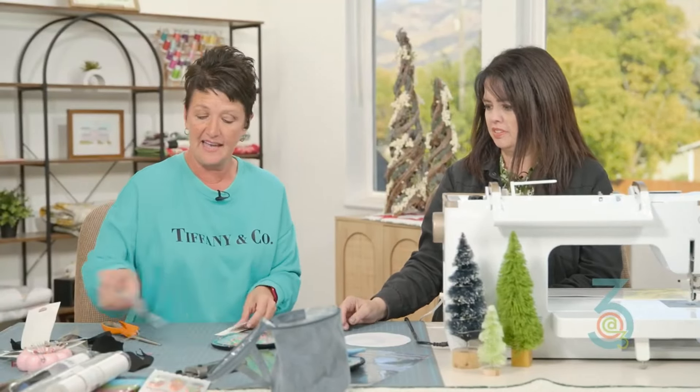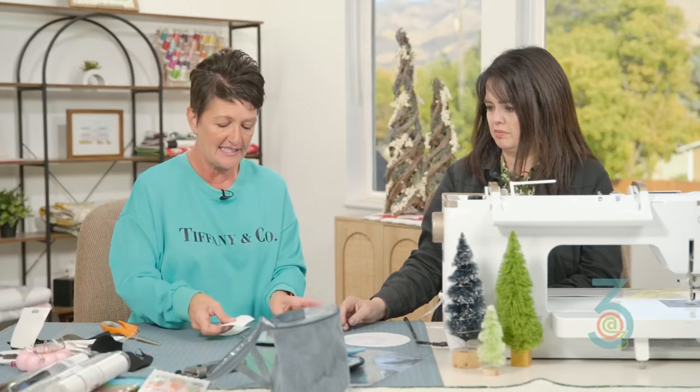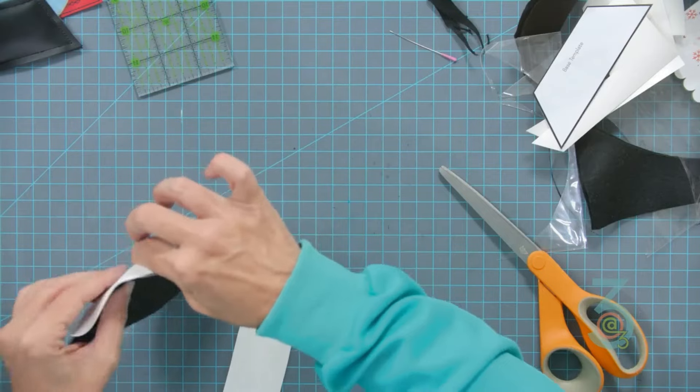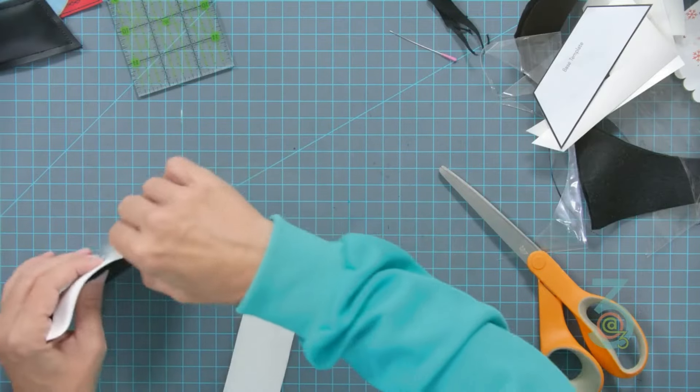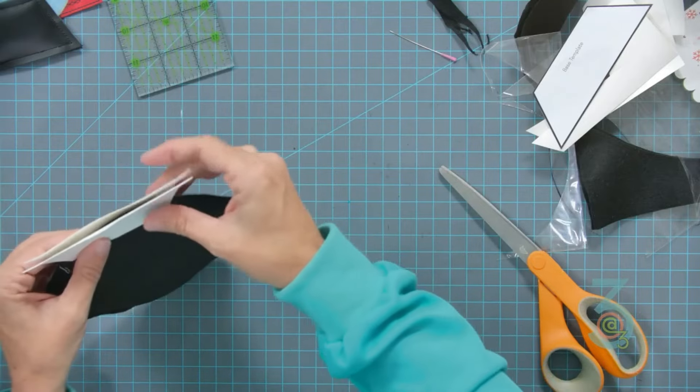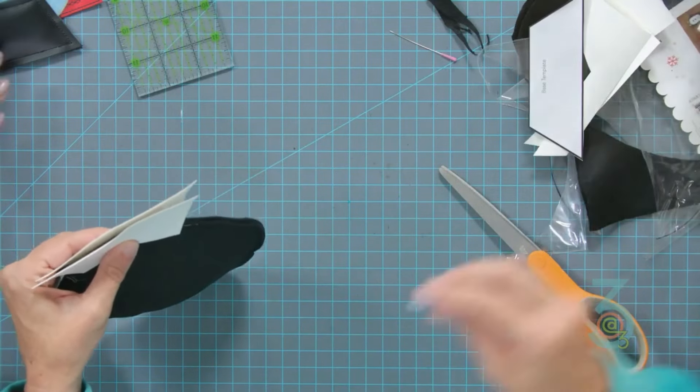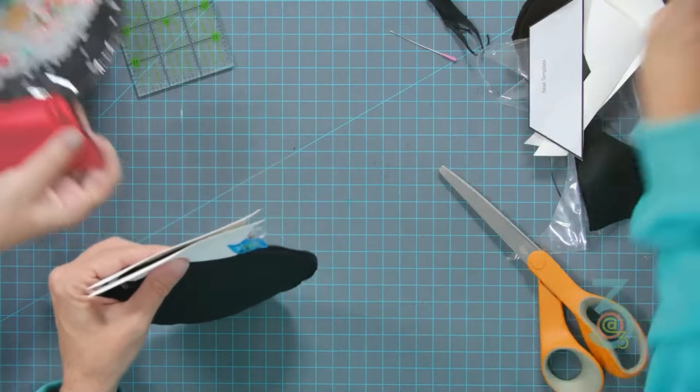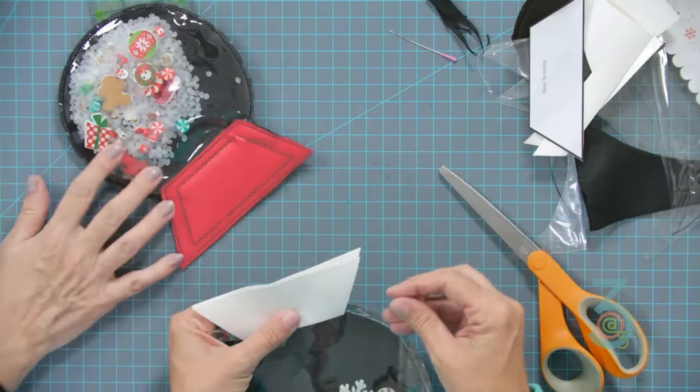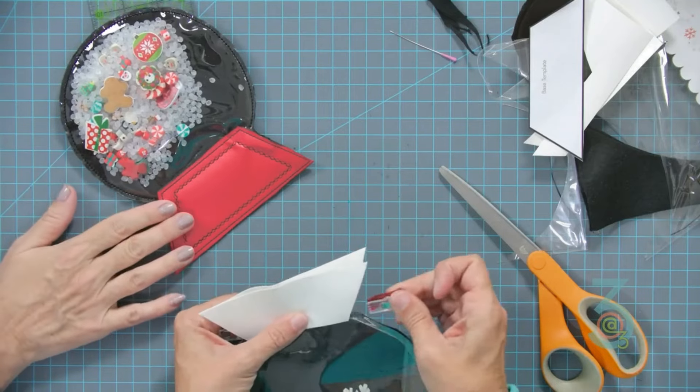Once we have our base on here, we are going to put wrong sides together and I like to just line it up kind of where you had the opening. Be sure you're not going to hit any of those poly pellets.